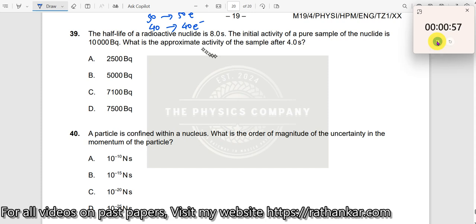Question number 39. The half-life of a radioactive nuclide is 8 seconds. The initial activity of a pure sample of the nuclide is 10,000 Bq. What is the approximate activity of the sample after 4 seconds?